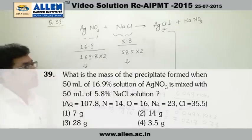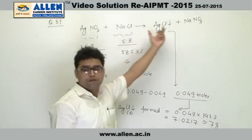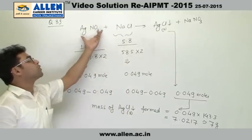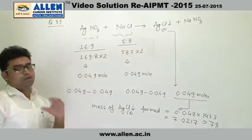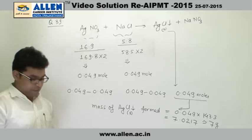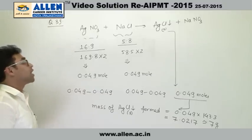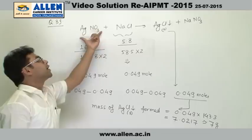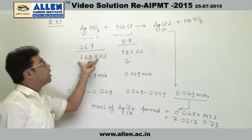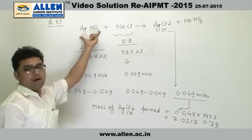Question number 39. We will write down the reaction: AgNO₃ + NaCl → AgCl + NaNO₃. We will first find out the moles of AgNO₃ and NaCl. The two solutions are 16.9% w/v and 5.8% w/v. This means that in 100 ml of solution, AgNO₃ is 16.9% present. The moles are found by dividing by its molecular mass: 16.9 divided by 169 gives the moles of AgNO₃ present in 100 ml of solution.